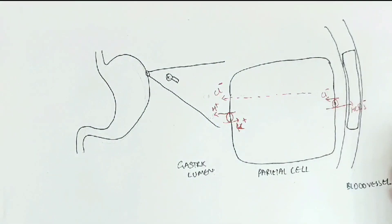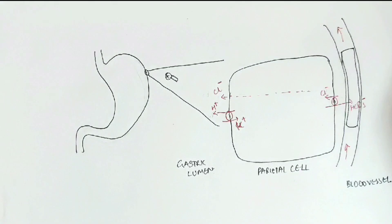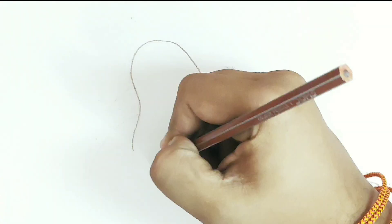They are going to get the chloride ions they need from the plasma. In return, to maintain the electrical neutrality of the plasma, they are going to release a bicarbonate ion into the plasma. This increase in bicarbonate ion concentration in the plasma is referred to as alkaline tide, as it's going to contribute to the alkalinity of the plasma. It is generally seen after taking a really tasty yummy meal.